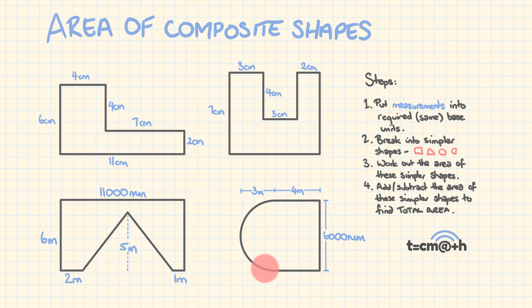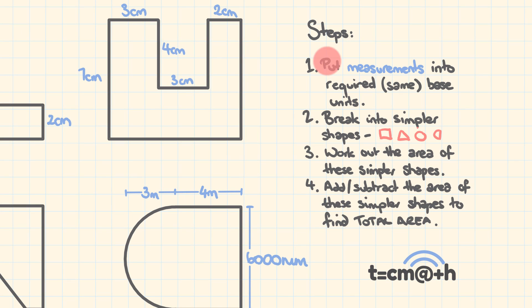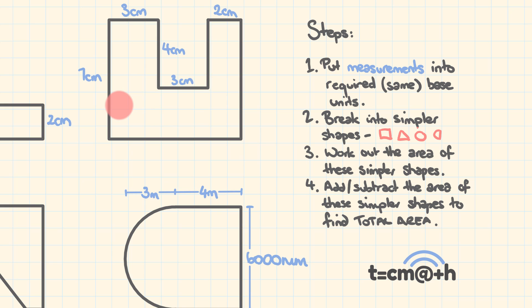The way that we do these, the steps are pretty much the same that I'd recommend each time. The first thing you'd want to do is put the measurements into the same base units, but also the required base units. For example, if you were working out the area of a floor, you wouldn't want to work it out in square millimeters or square inches — these wouldn't be useful. You'd want to work things out in square meters. Then we're going to break these into simpler shapes, work out the area of those simpler shapes, and then do addition or subtraction to work out the total area.